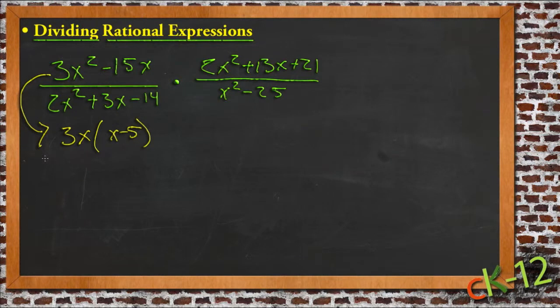And then if we factor the bottom expression, this is the trinomial, and it factors as 2x plus 7 over x minus 2.